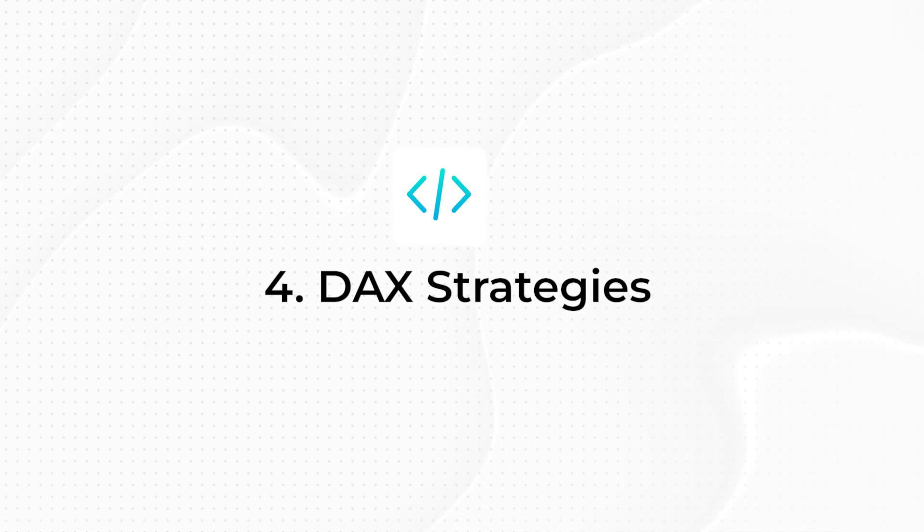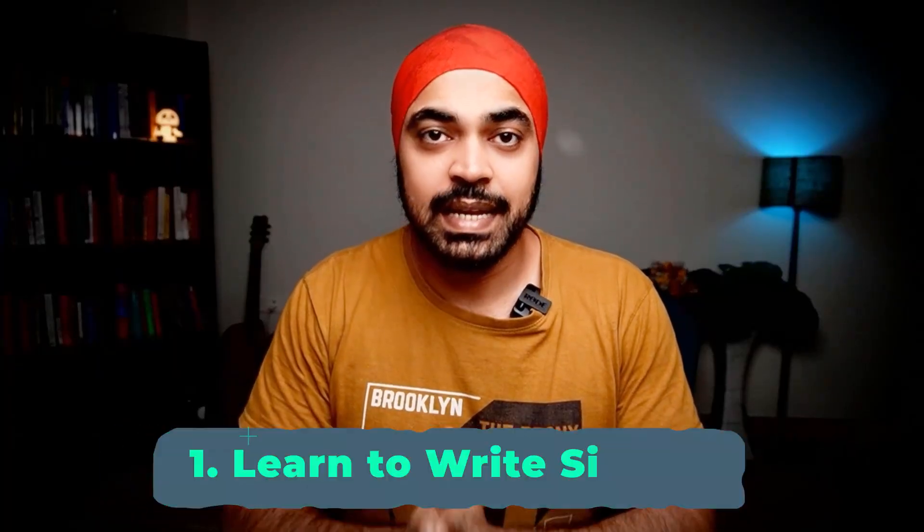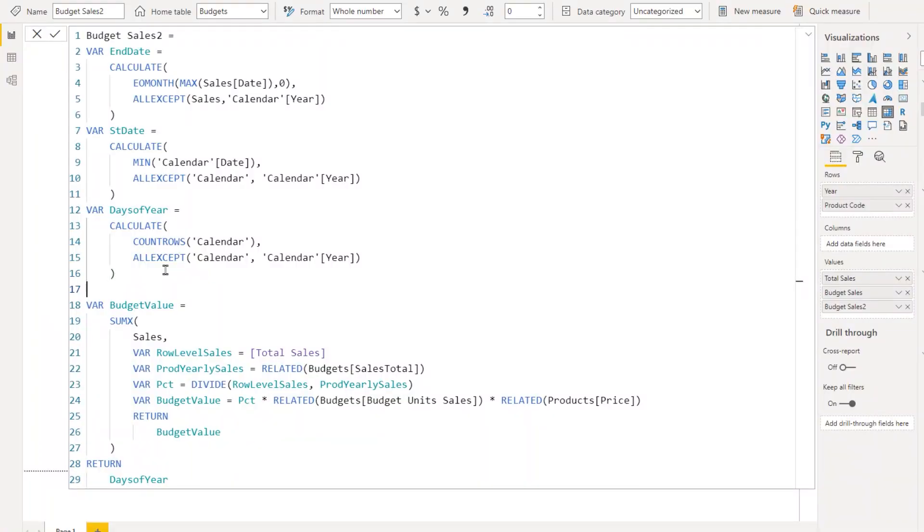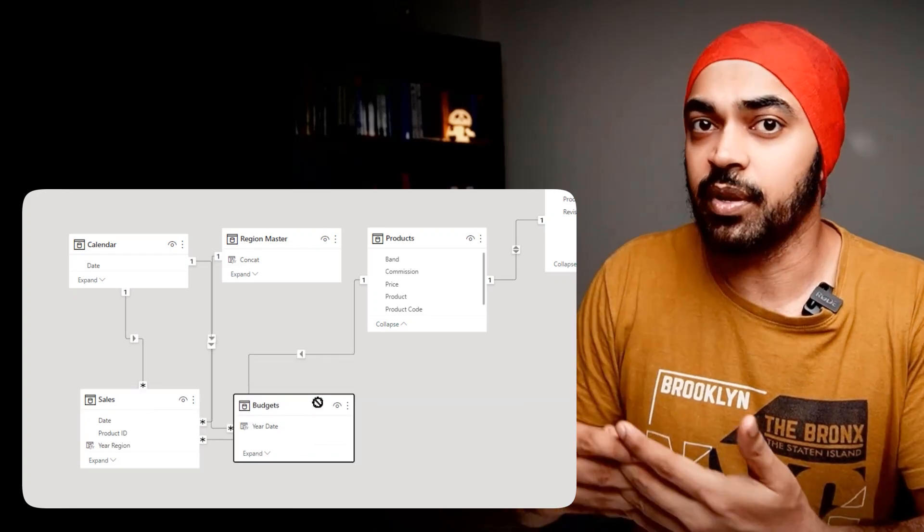Once your Power Query work is done, you move data into Power BI and start writing DAX calculations. The first thing to keep in mind is to write simple DAX. If your DAX is becoming complicated, the problem likely lies with the data model, not the DAX itself — which brings me back to thinking about data modeling first. Even for hard calculations with a simple model, look for creative modeling approaches, relationships, or table solutions rather than writing very complicated DAX.